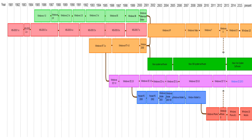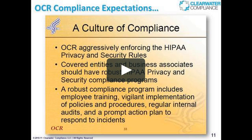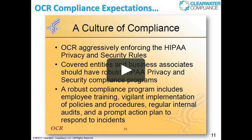Worms spread by exploiting vulnerabilities in operating systems. Vendors with security problems supply regular security updates, and if these are installed on a machine, then the majority of worms are unable to spread to it. If a vulnerability is disclosed before the security patch is released by the vendor, a zero-day attack is possible.